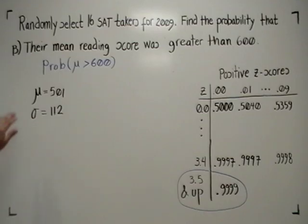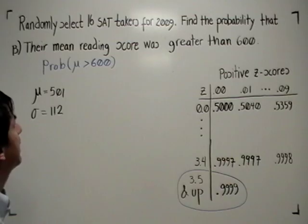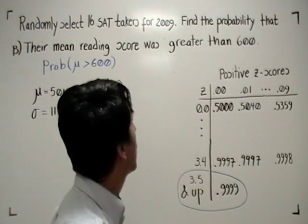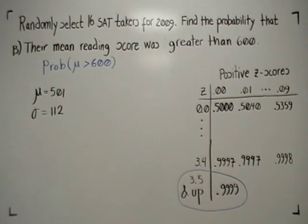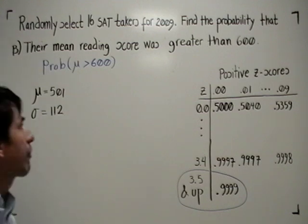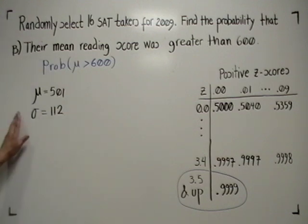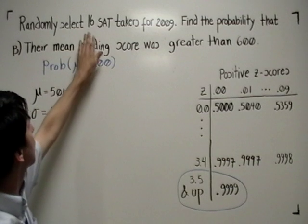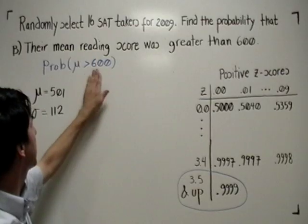Now, here is the experiment. We're randomly selecting 16 SAT takers for 2009. We are asking to find the probability that their mean reading score was greater than 600. So that's the same as asking, what is the probability that the mean reading score for the 16 individuals was greater than 600?